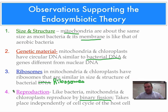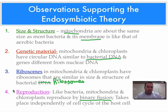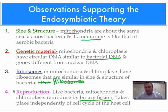So we have four different pieces of evidence to support the endosymbiotic theory of how mitochondria and chloroplasts evolved. That's going to end this series on Evolution 2. Until our next series, we'll catch you on the flip side.